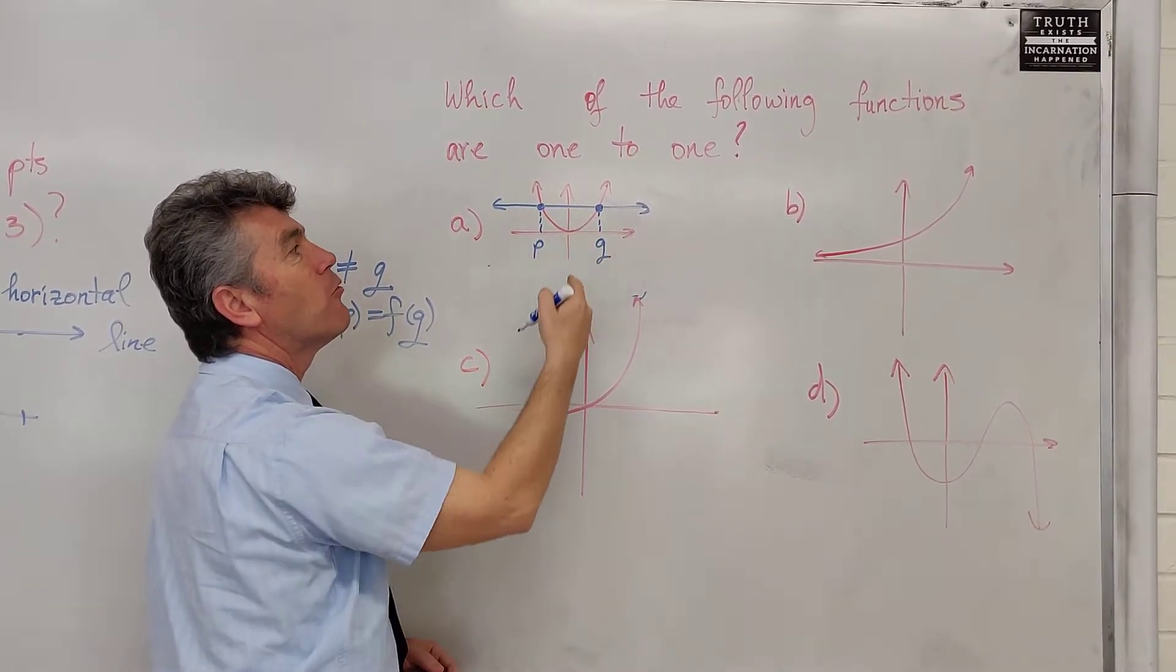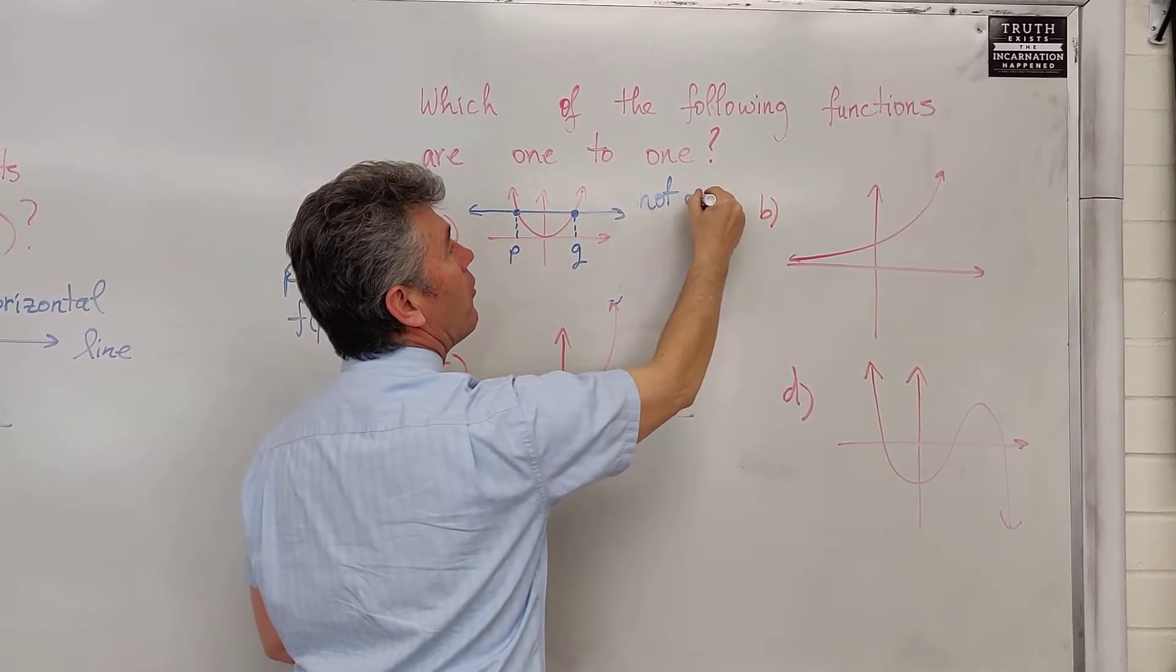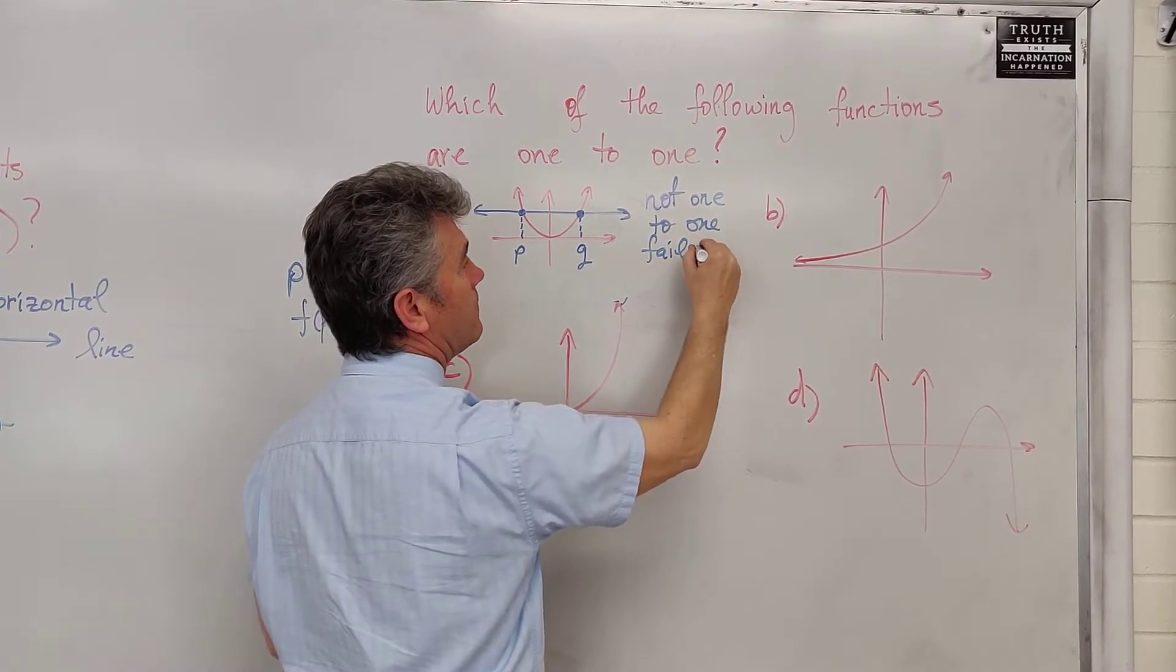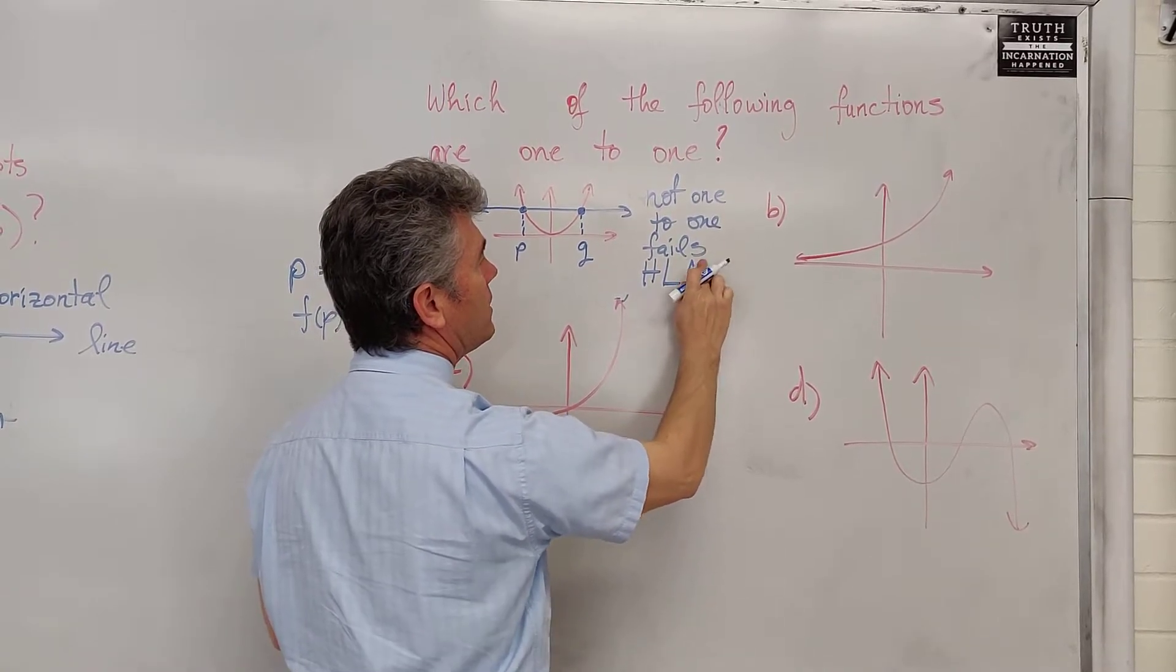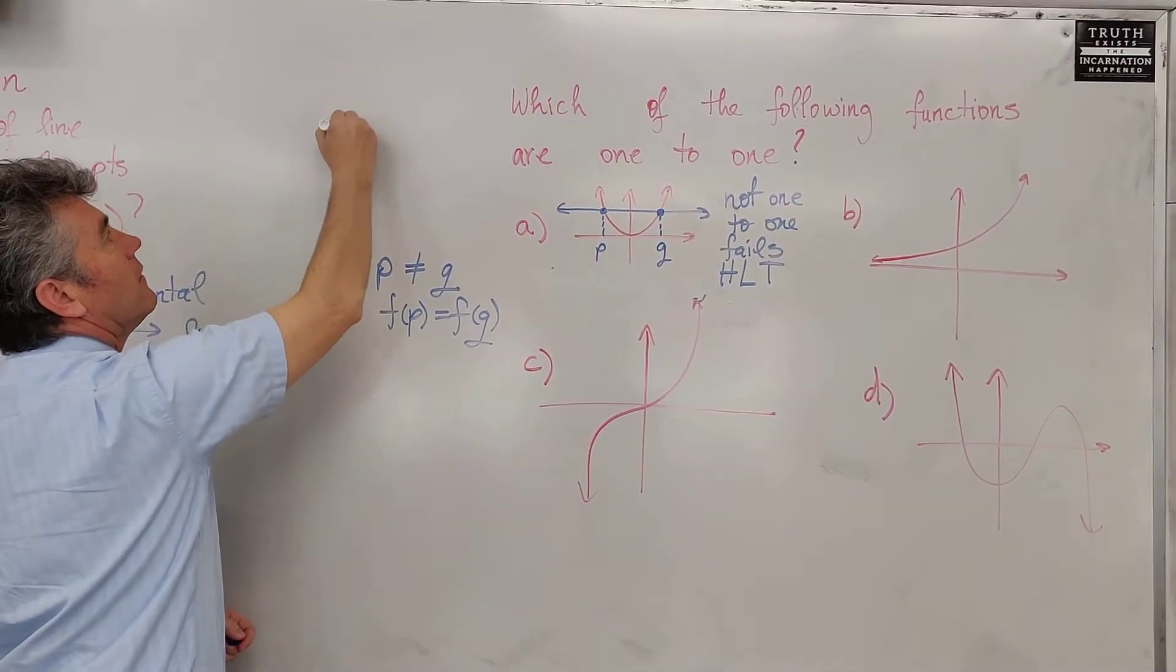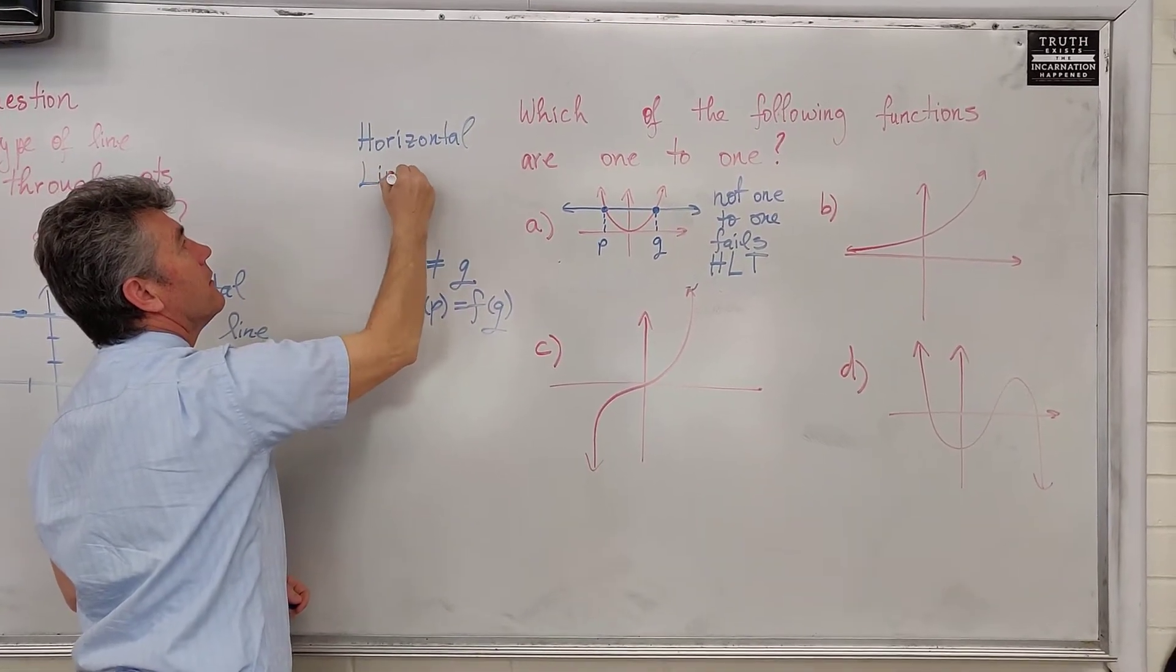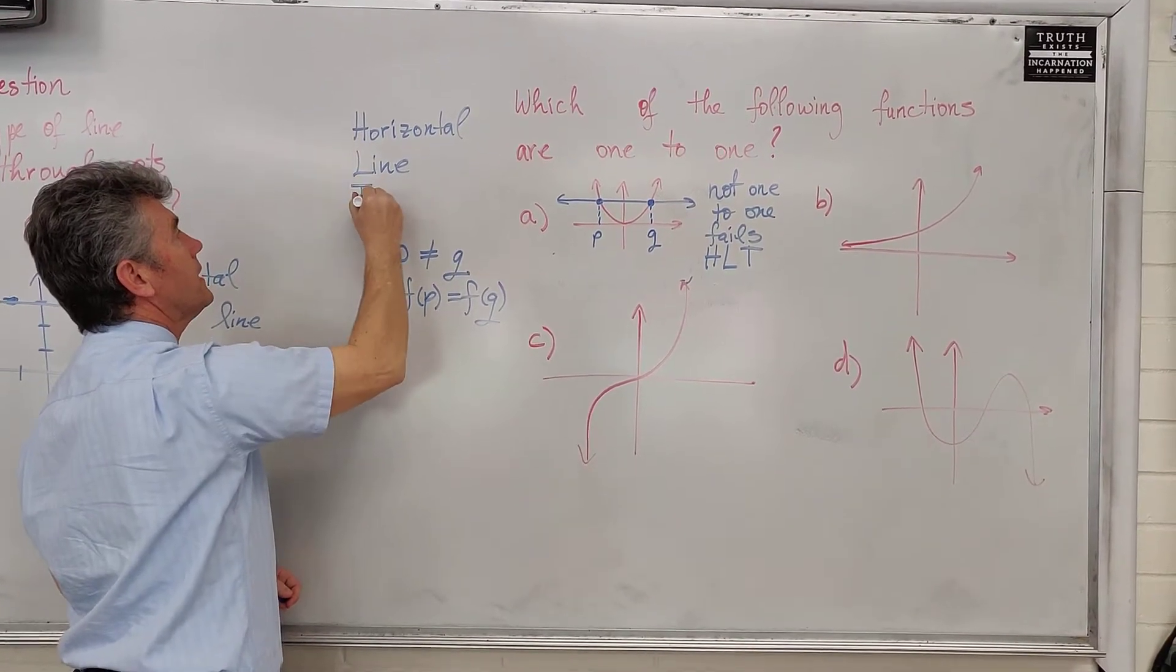The problem is that there are two points that have the same y-coordinate. Different points, same y-coordinates, so we say not one-to-one. One-to-one fails, H-L-T. What is H-L-T? Horizontal line test.